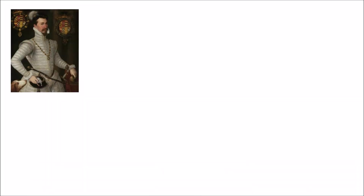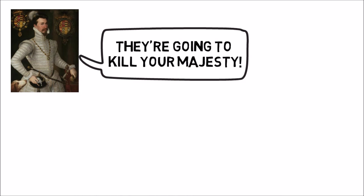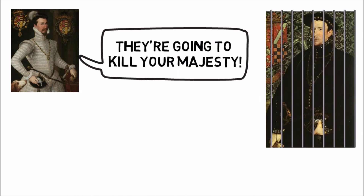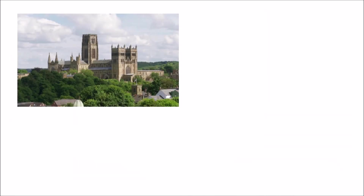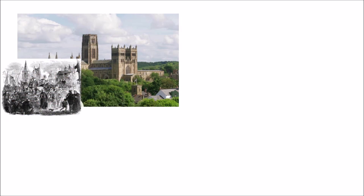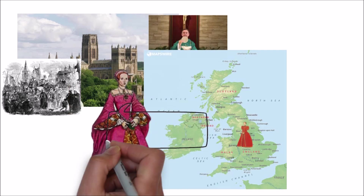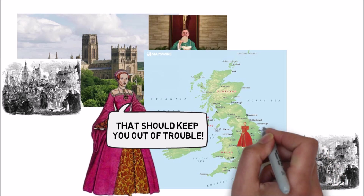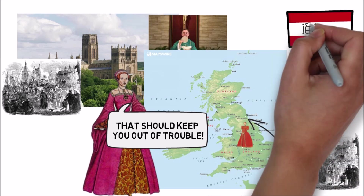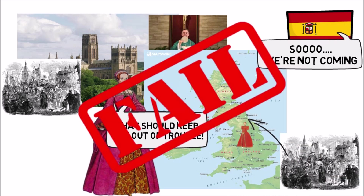However Robert Dudley finds out about the plan and reveals the plot to Elizabeth. Immediately Norfolk is arrested. Despite this, Northumberland and Westmoreland — with the help of their wives — continue their planned revolt. They march to Durham Cathedral with people from their estates and celebrate the Catholic mass. In response Elizabeth moves Mary to Coventry to remove her as a risk. The rebels do capture Hartlepool, but since no Spanish support arrives the plot ultimately fails.